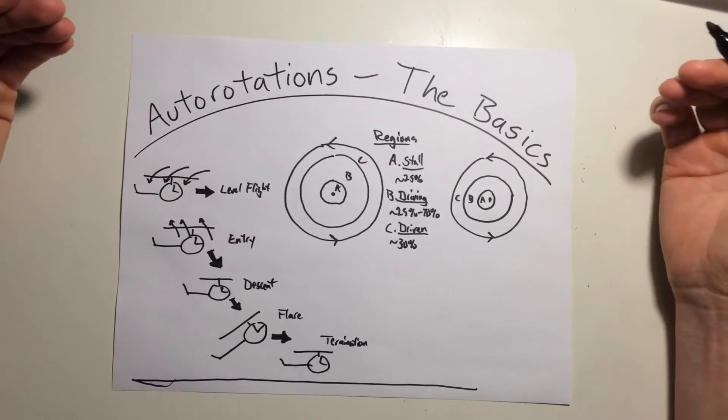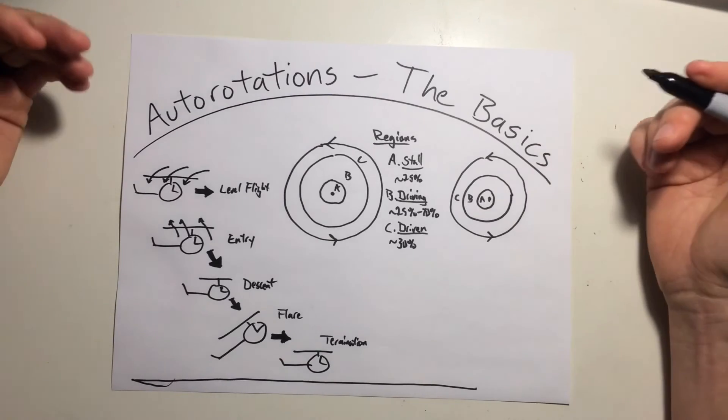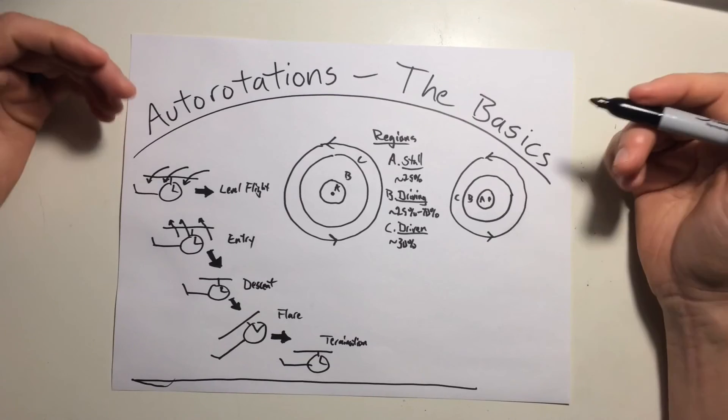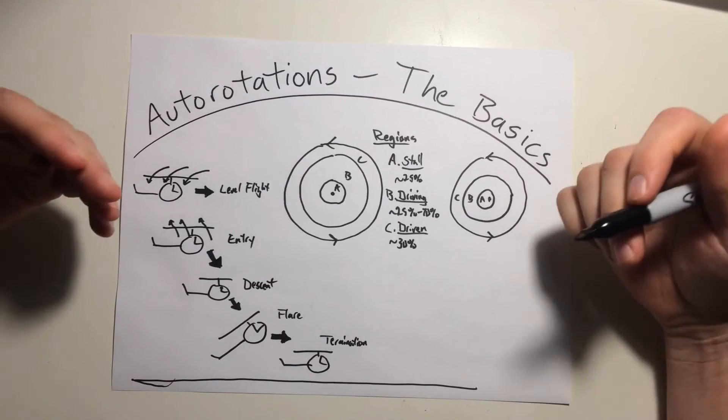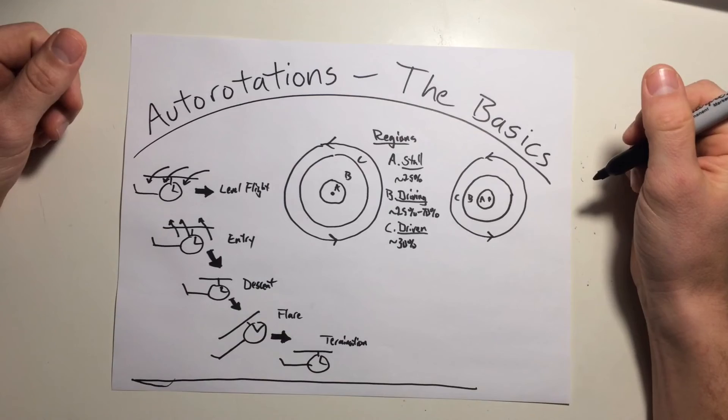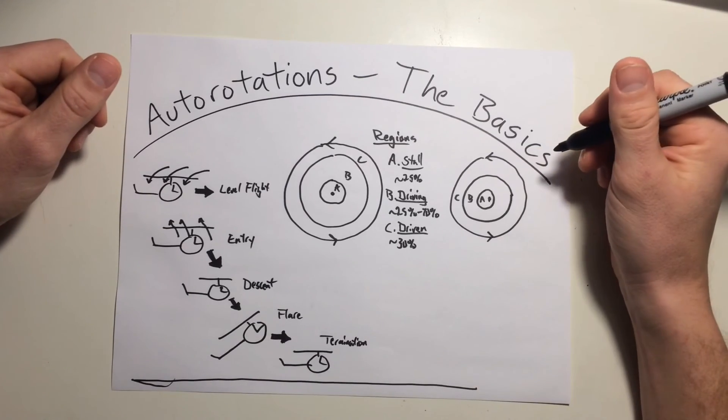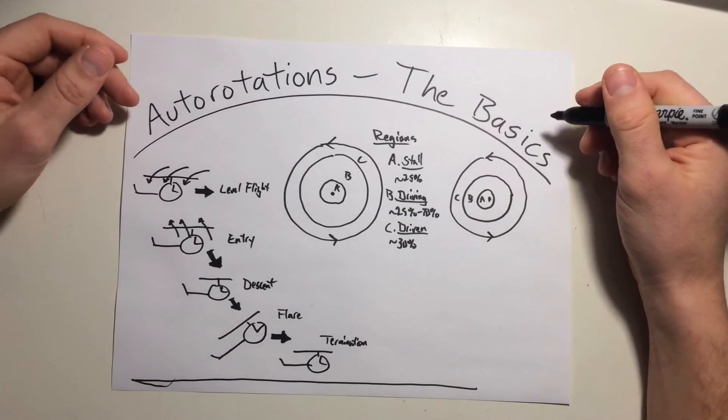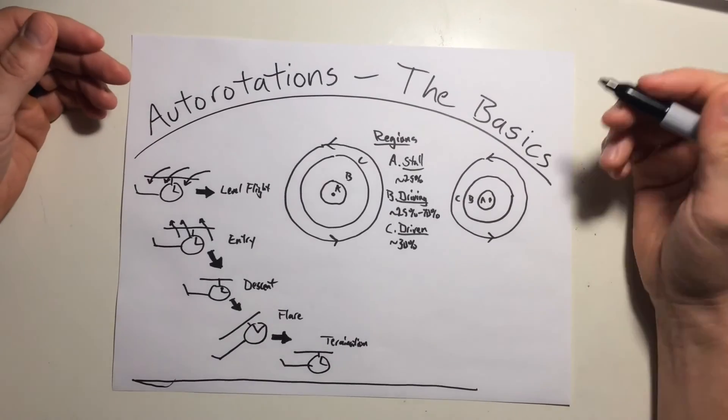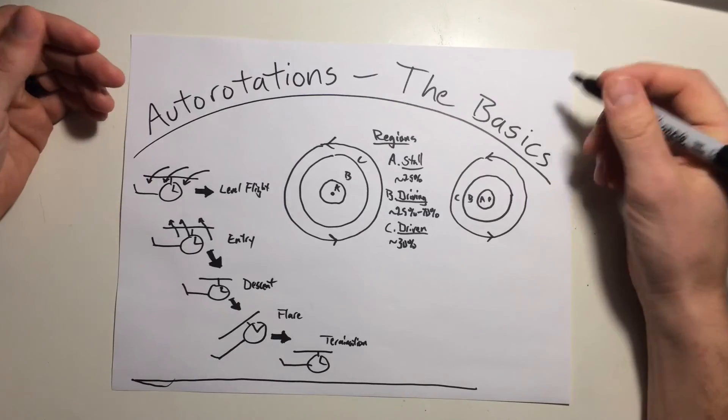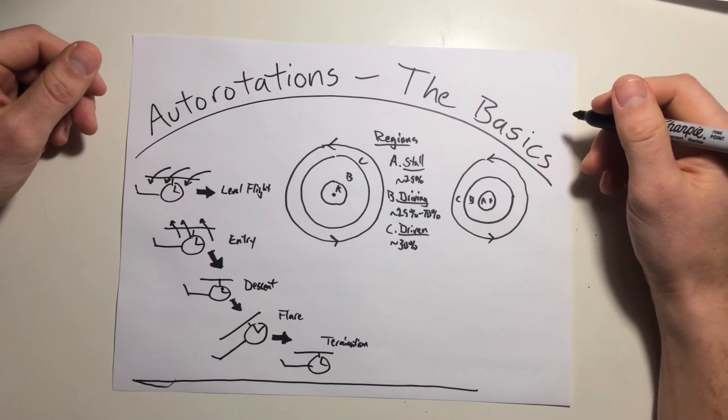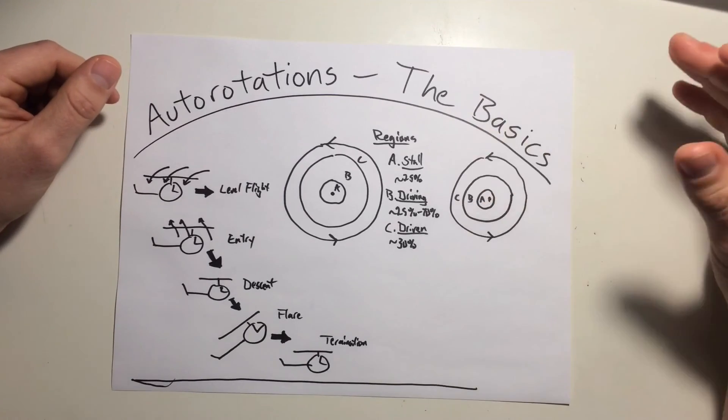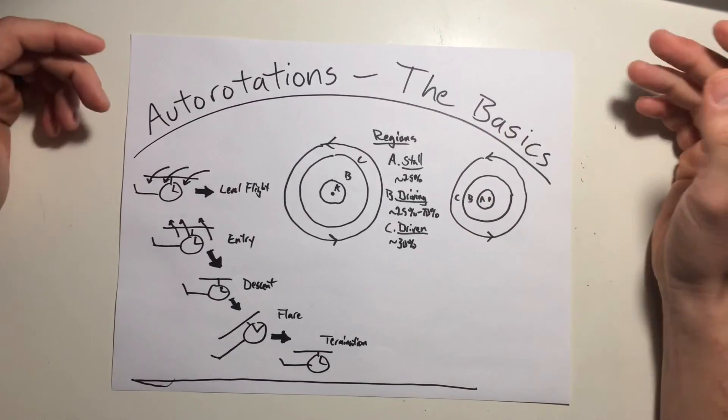Alright, well that wraps up the basics of an autorotation. Much of this material is outlined more in depth in the book Cyclic and Collective. I'd recommend checking that out if you're looking to continue your professional education. I definitely pull a lot of material from that book and put it in a lot of my videos. But I'll put that link in the description of this video if you're interested in that. But from now I'd like to hear what you guys and gals have to say. Share your thoughts, your techniques, your tips, tricks, and questions in the comments section below. And let's make this a conversation. Let me hear what you have to say and I'll take a lot of that information and put that into an advanced autorotations video at a later date.